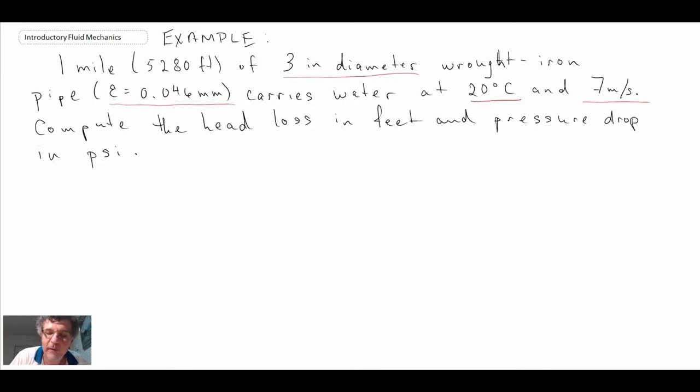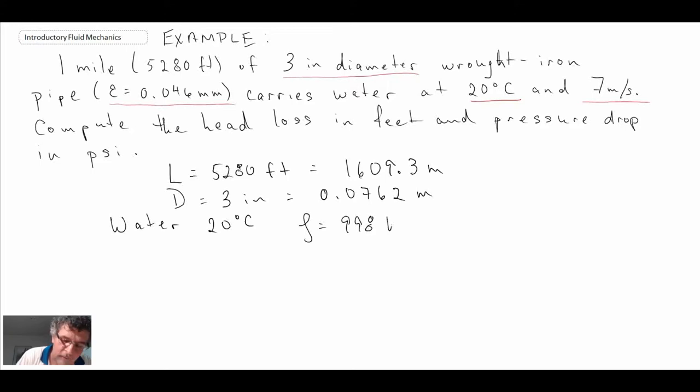We have two ways of going about this. We can use British units or SI. I will convert to the SI units because I am more comfortable with those units. Looking at values for water, we have the dynamic viscosity, the density, and the velocity is 7 meters per second. The first thing we want to do is calculate the Reynolds number for the pipe flow.